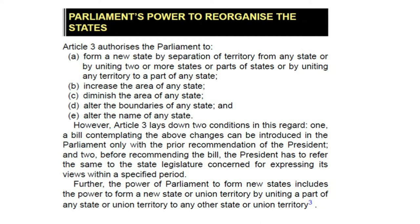However, Article 3 lays down two conditions in this regard. First, a bill contemplating the above changes can be introduced in Parliament only with the prior recommendation of the President. Second, before recommending the bill, the President has to refer the same to the state legislature concerned for expressing its views within a specified period. Further, the power of Parliament to form new states includes the power to form a new state or union territory by uniting a part of any state or union territory to any other state or union territory.